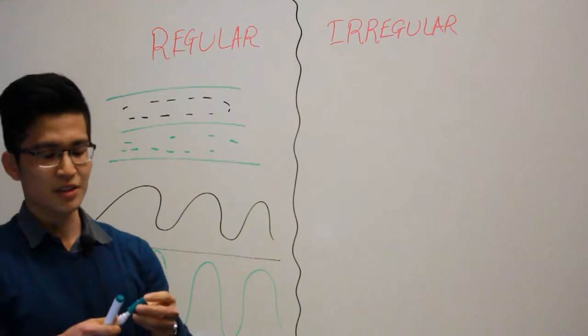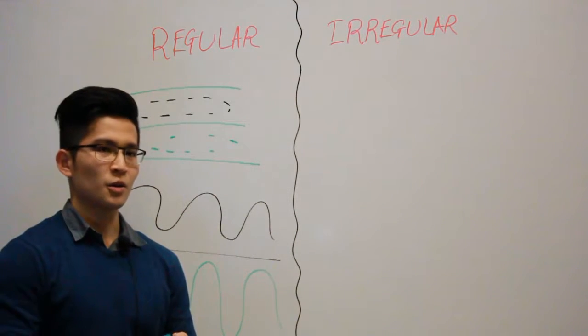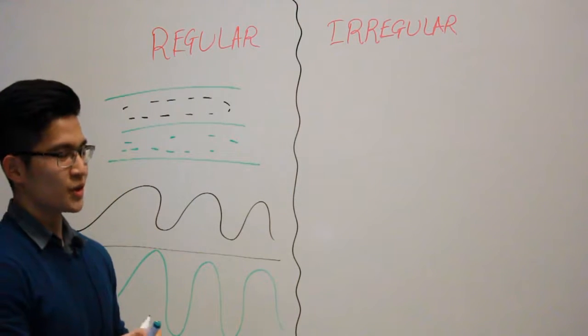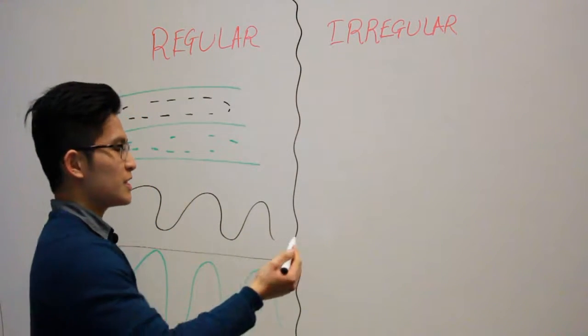Now we can talk about the more exciting part which is the irregular stratification. So, convoluted beddings. I'm pretty sure that you guys are wondering like, how does it look like?